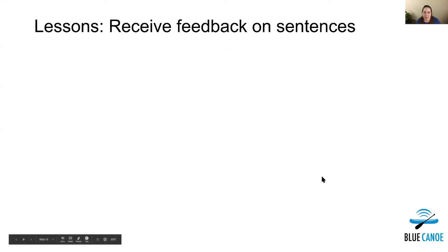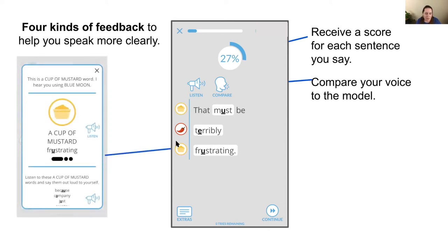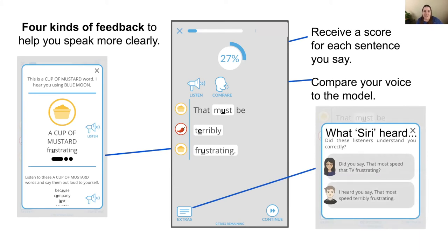When they record, they receive visual feedback on their sentence. First, there's a holistic score indicating how much feedback to take in. The learner can compare their voice to the model. Next, they move into the words themselves and click each icon to receive specific feedback. Here, for example, the student said frustrating instead of frustrating, and was corrected that this is a Cup of Mustard word — the AI heard them using Blue Moon. The artificial intelligence and voice recognition built into Blue Canoe can actually hear the difference between frustrating and frustrating. Finally, a learner may receive extra feedback from their own phone — essentially what Siri heard.